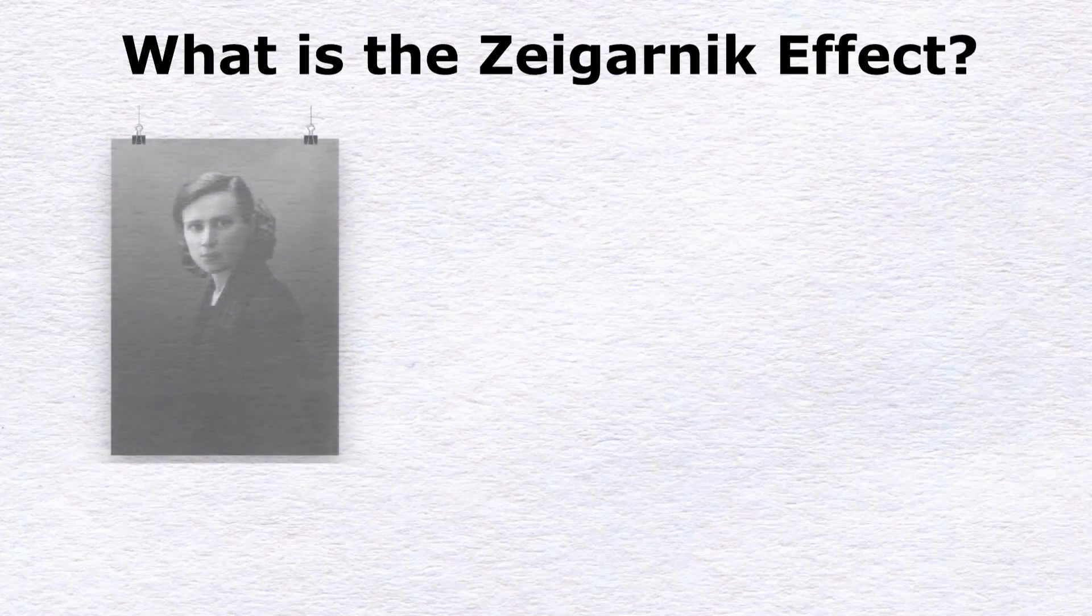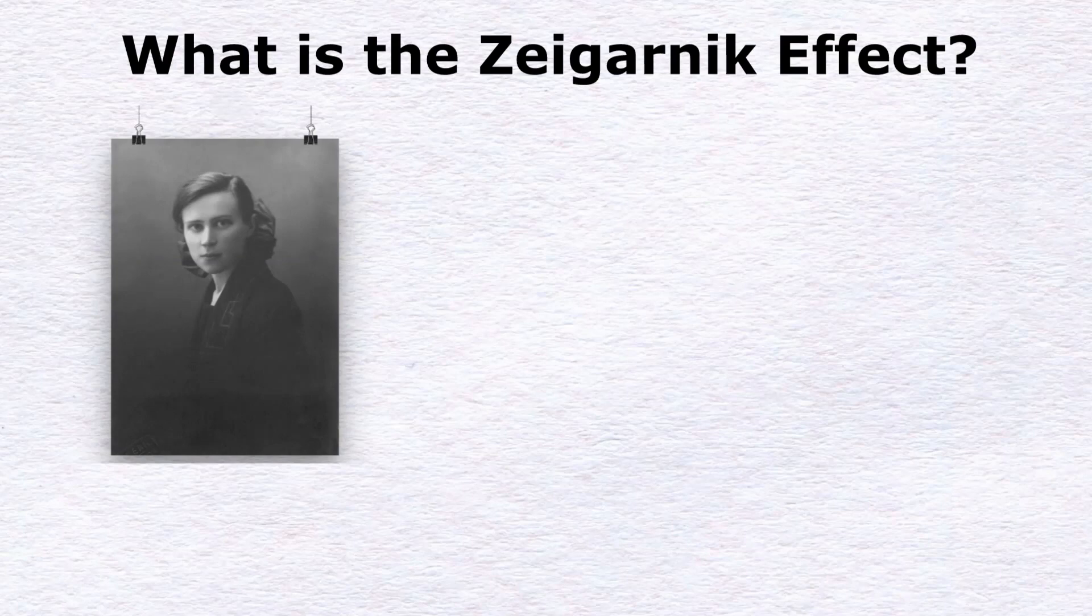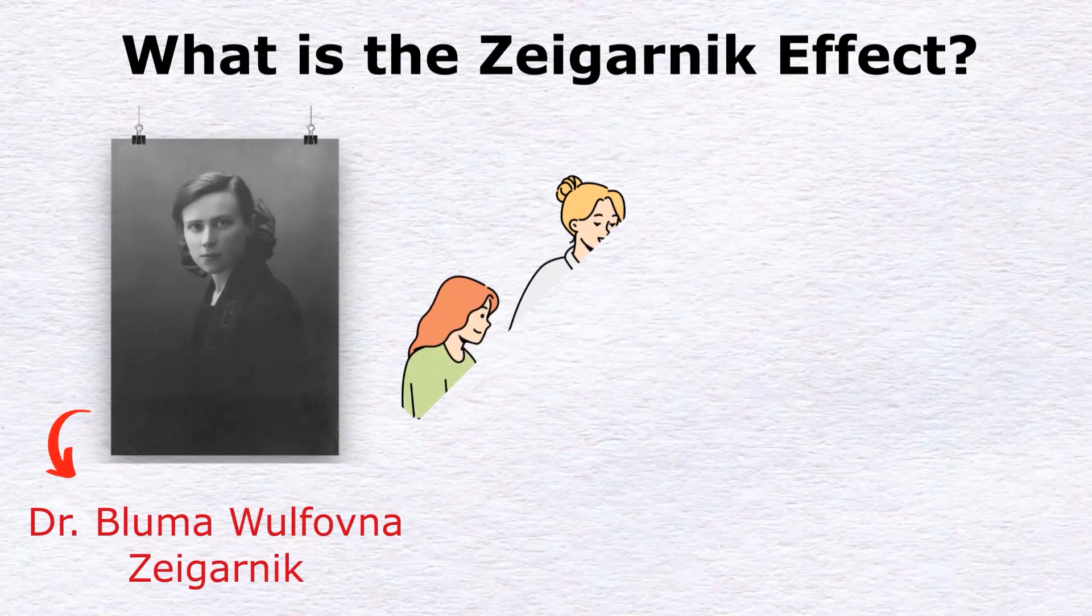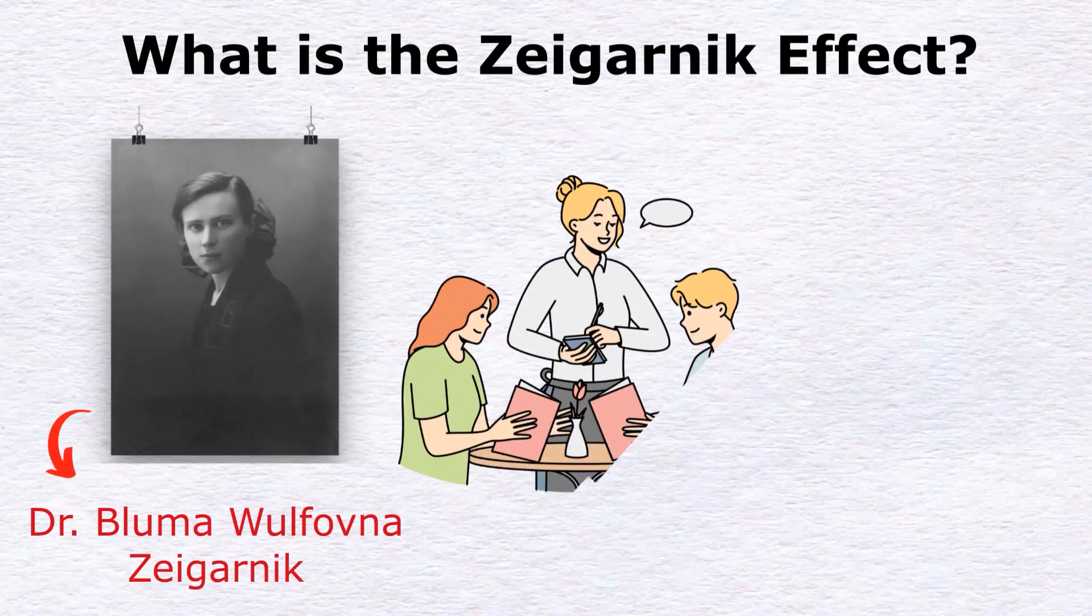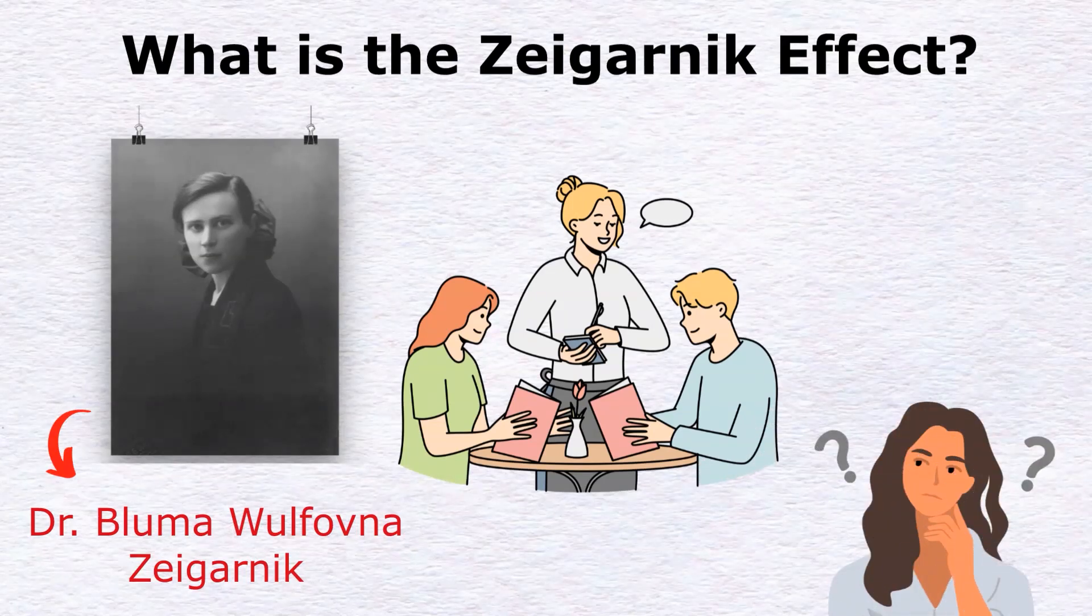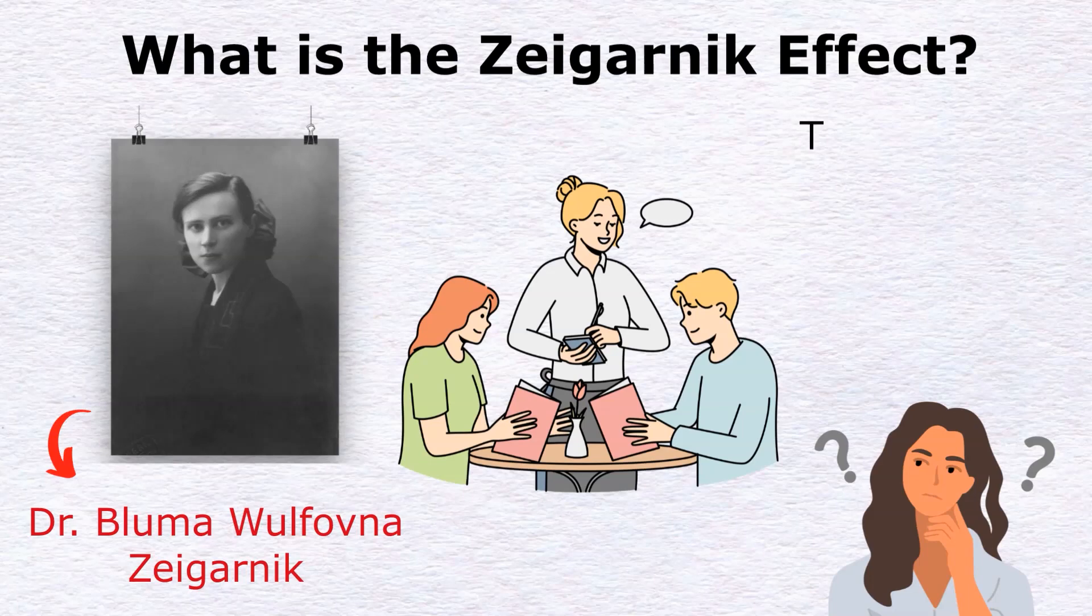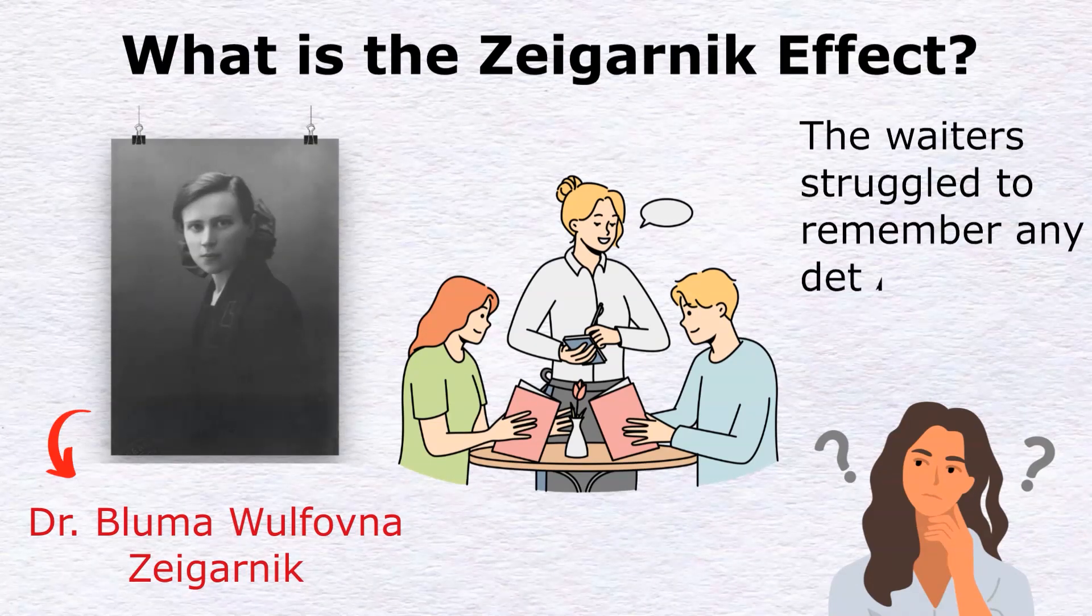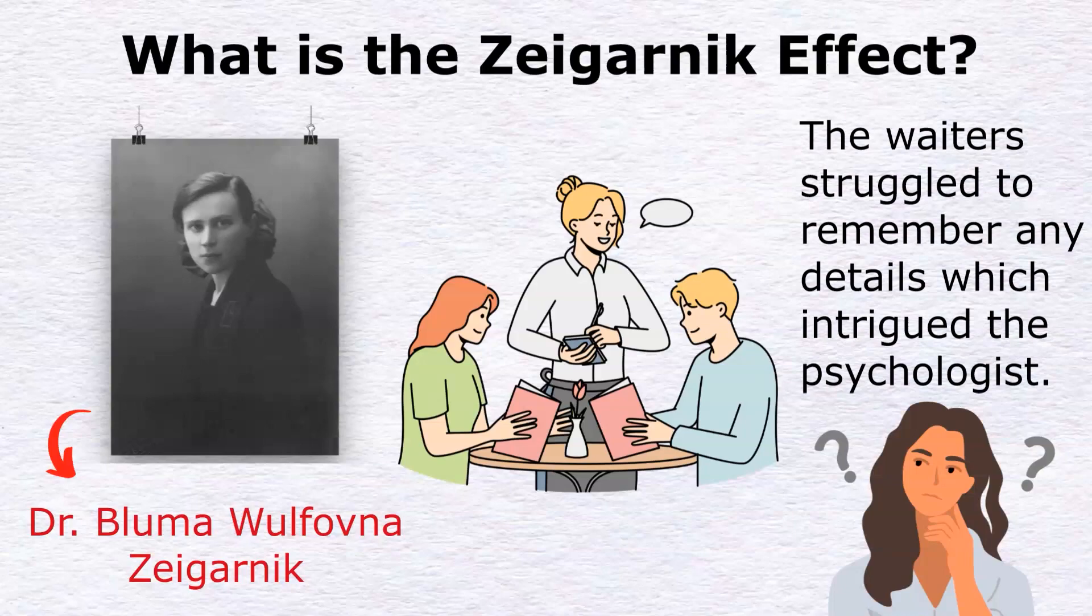What is the Zeigarnik effect? The concept was first introduced in the 1920s by Russian psychiatrist and psychologist Dr. Bluma Wolfovna Zeigarnik. While dining at a restaurant, Dr. Zeigarnik was fascinated by the waiting staff's ability to easily remember long and complex orders. It seemed to take little to no effort at all. But once the orders were filled and paid for, the waiters struggled to remember any details, which intrigued the psychologist.